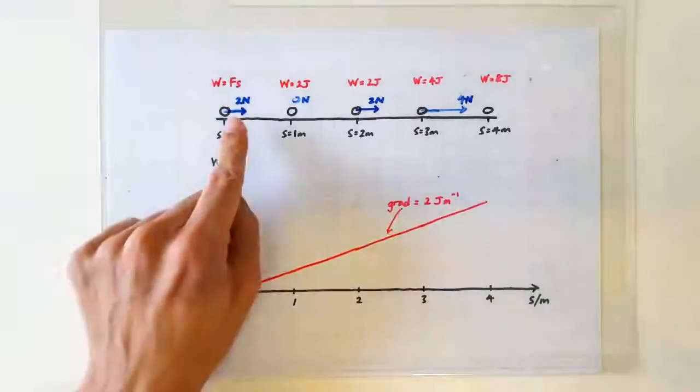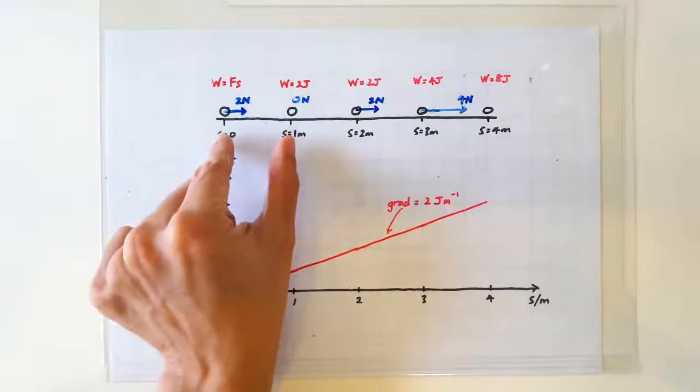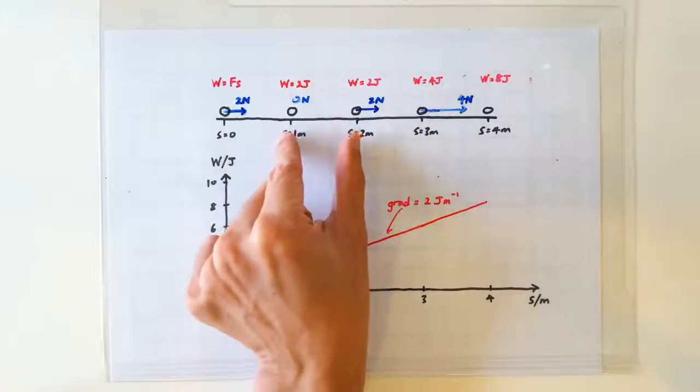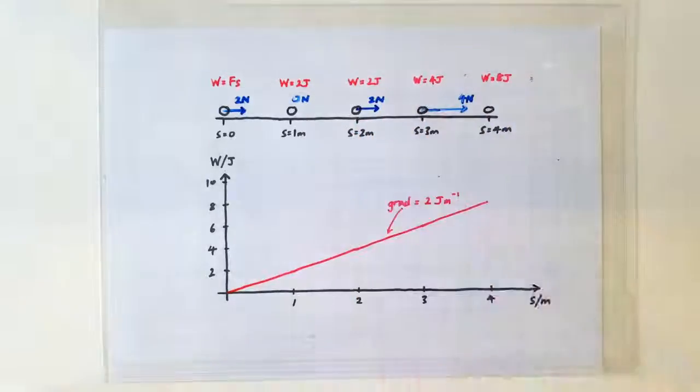What if the force is not constant? Instead we have 2 newtons for the first meter, 0 newtons for the second meter, 2 newtons for the third meter, and 4 newtons for the last meter.